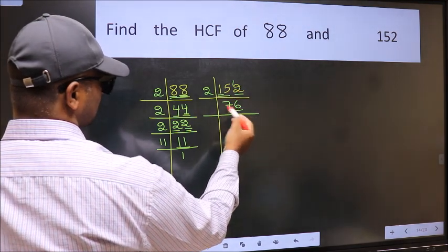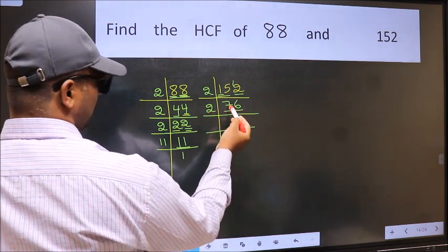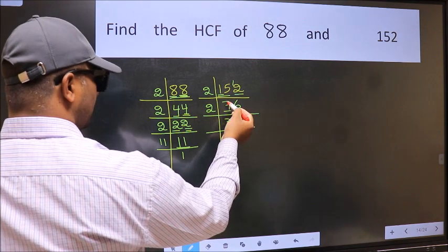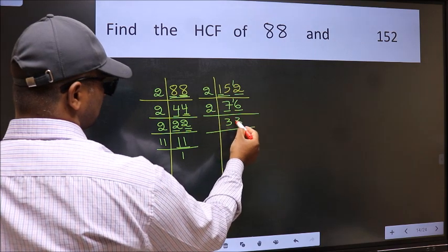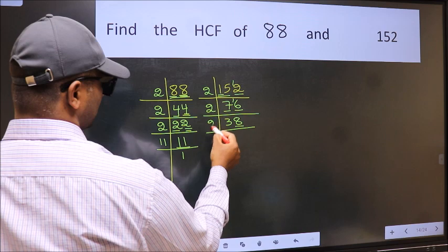Now last digit 6 is even, so take 2. First number 7. A number close to 7 in 2 table is 2 threes 6. 7 minus 6, 1, 1 carried forward 16. When do we get 16 in 2 table, 2 eights 16.